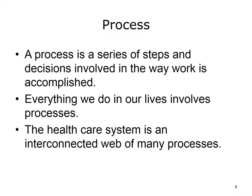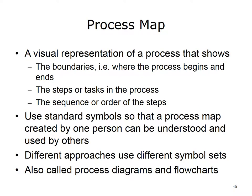John Gall, in his book Systematics, stated that a complex system that works is made up of simple systems that work. A process map is a visual representation of a process that shows the boundaries — i.e., where the process begins and ends — the steps or tasks in the process, and the sequence or order of the steps. Process maps use standard symbols, so that a process map created by one person can be understood and used by others. There are different approaches to process diagramming, each with its own symbol set. Process maps are also called process diagrams and flow charts.